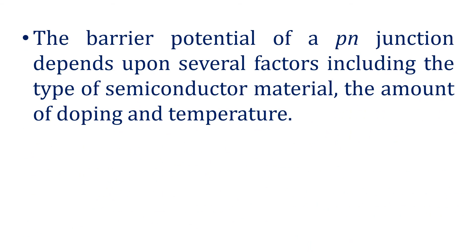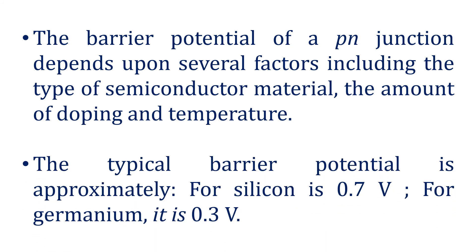The barrier potential of a P-N junction depends upon several factors, including the type of semiconductor material, the amount of doping, and temperature. The typical barrier potential is approximately 0.7 volt for silicon and 0.3 volt for germanium.